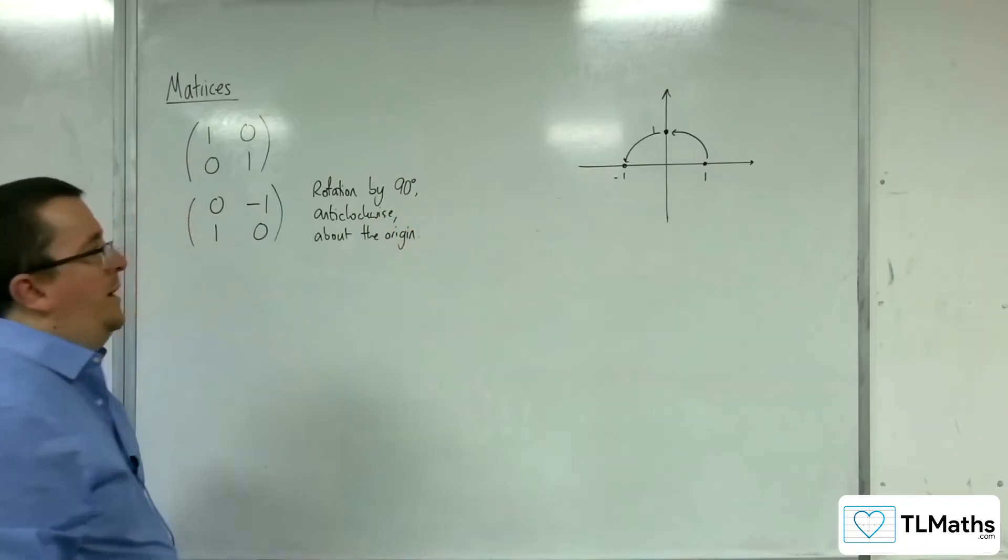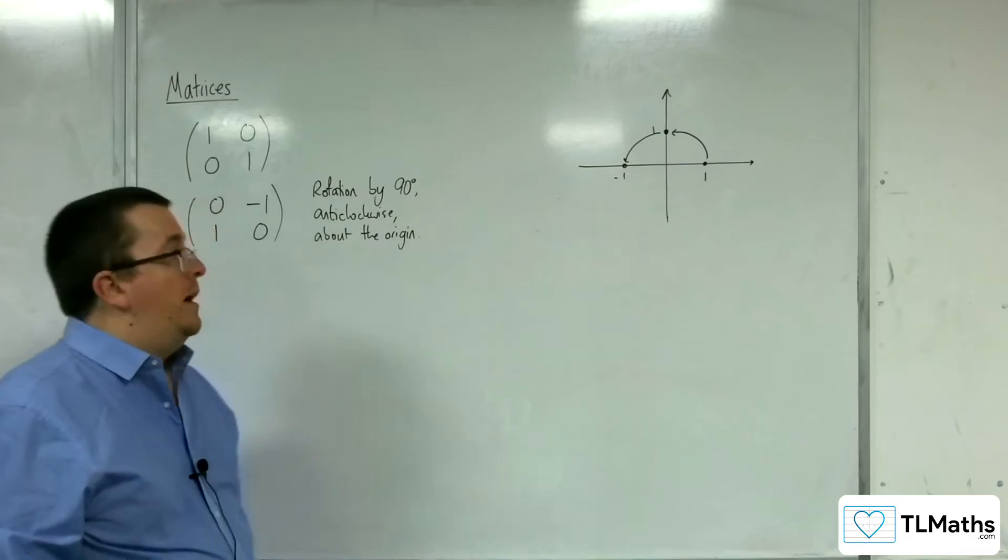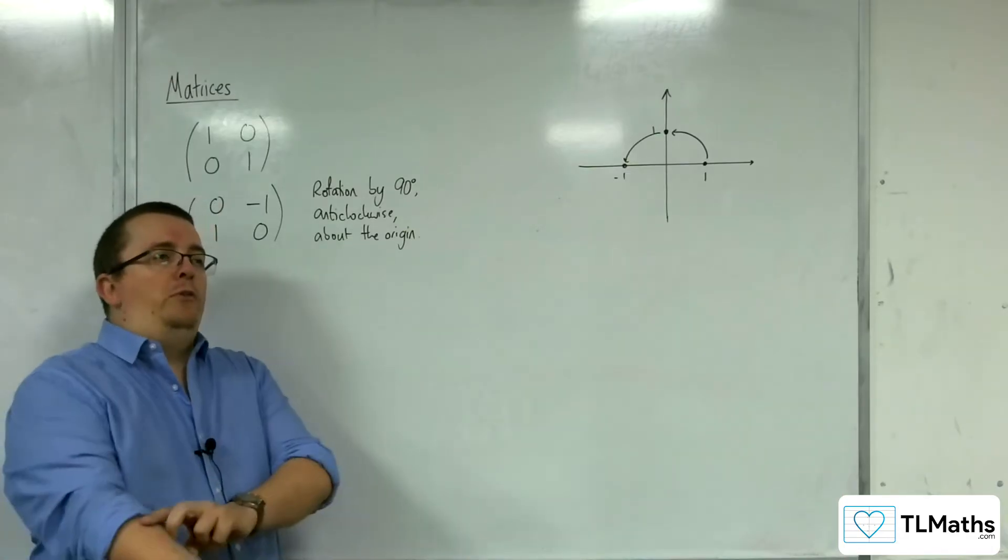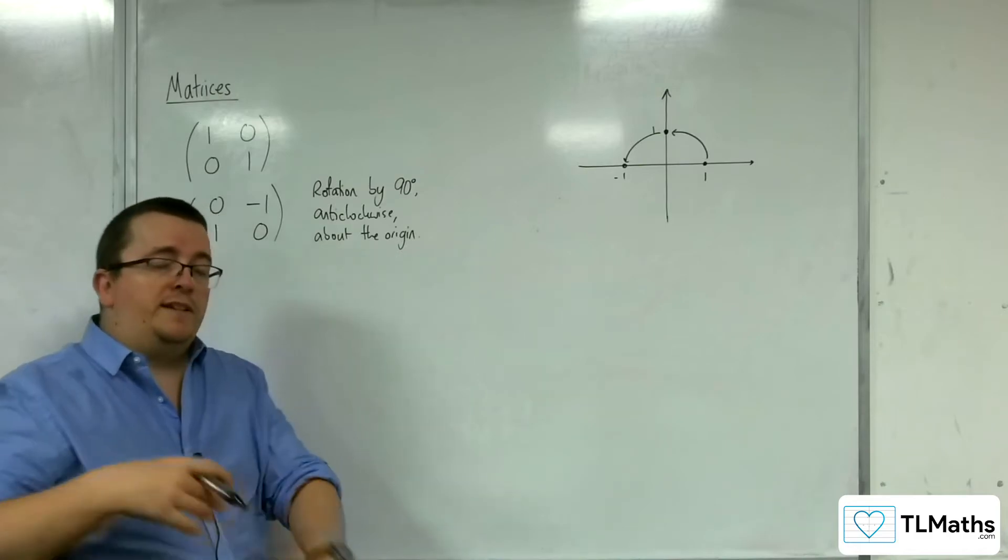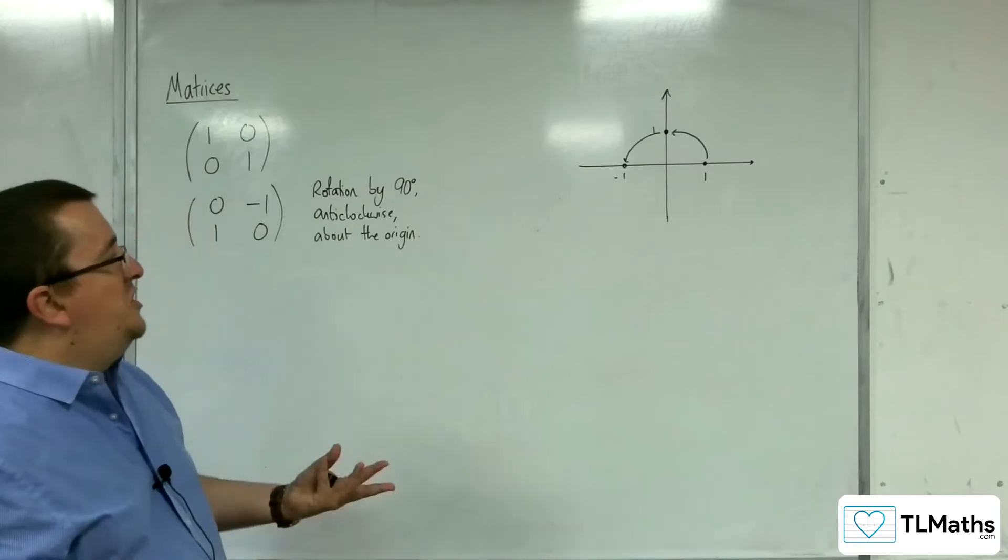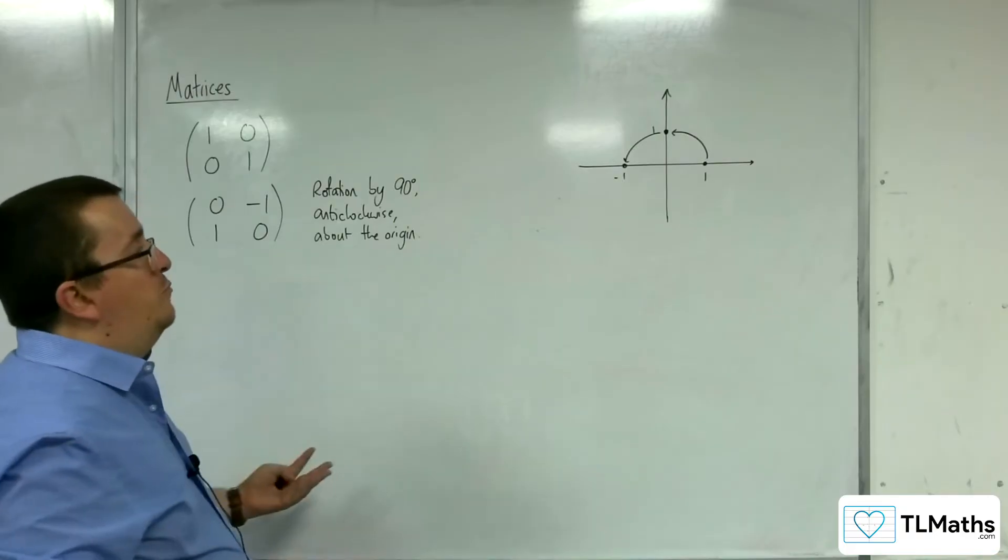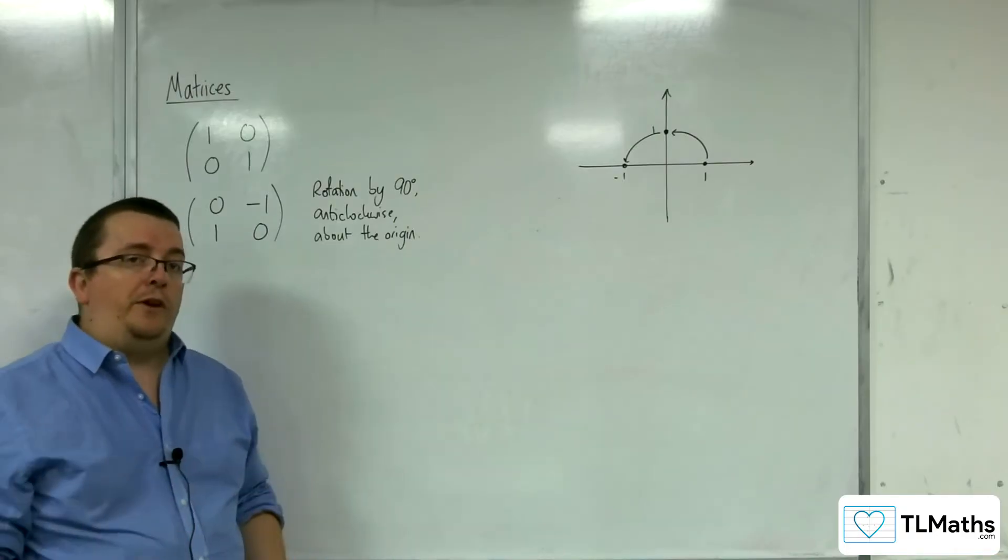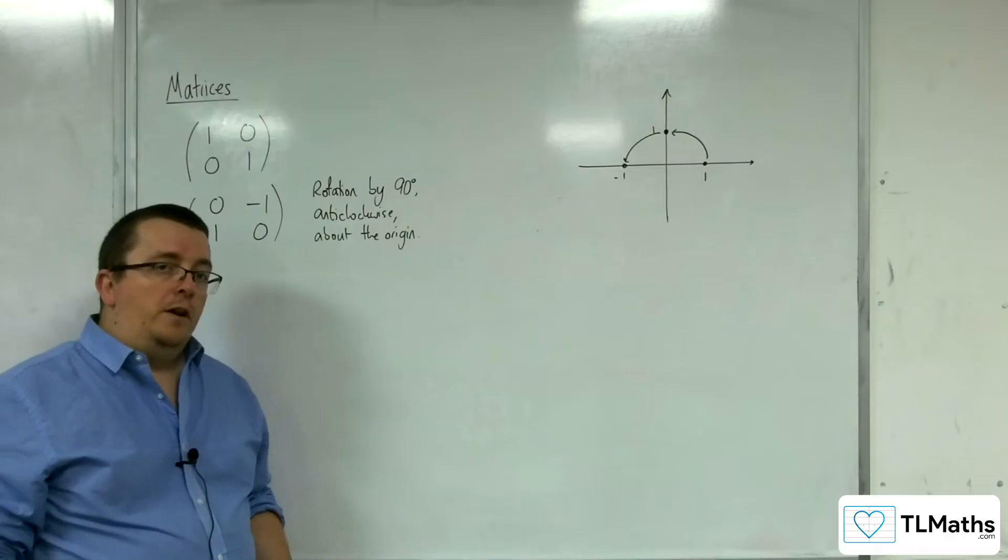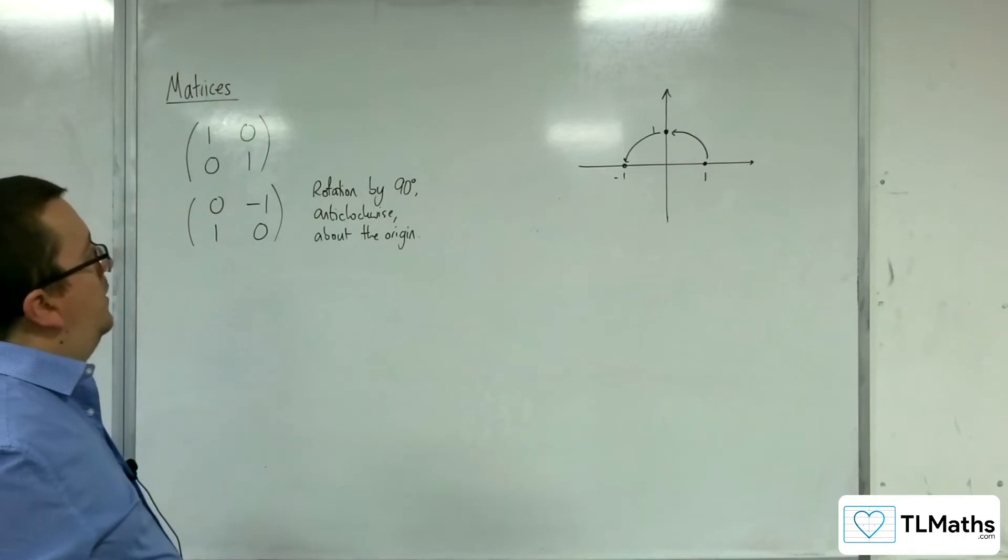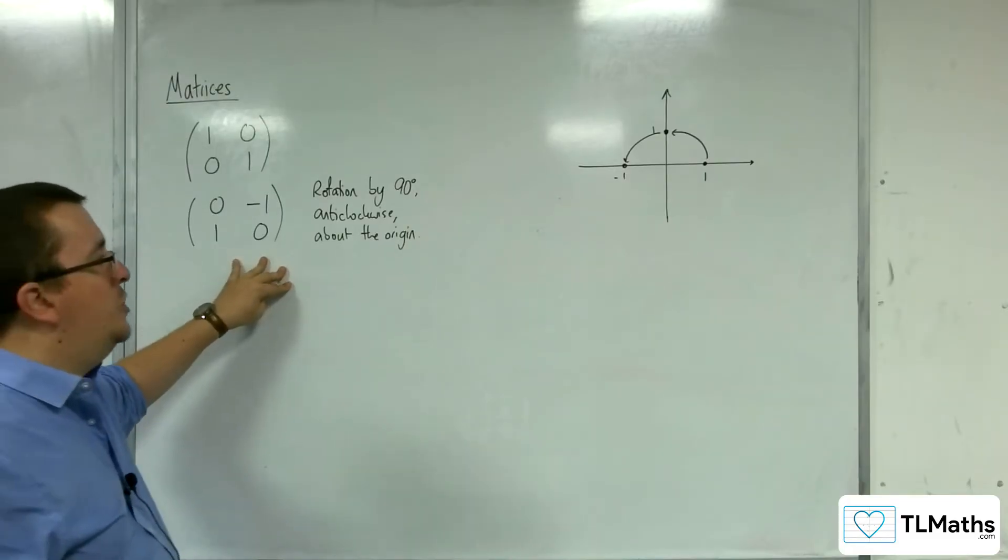And we can see that just by seeing how those points were traced round. Now, we could also look at our rectangle that we've looked at in the previous videos and just see how that's been changed as well. It might be good practice to convince yourself that that is what is going on. So let's keep going. That's rotation by 90 degrees anticlockwise about the origin.